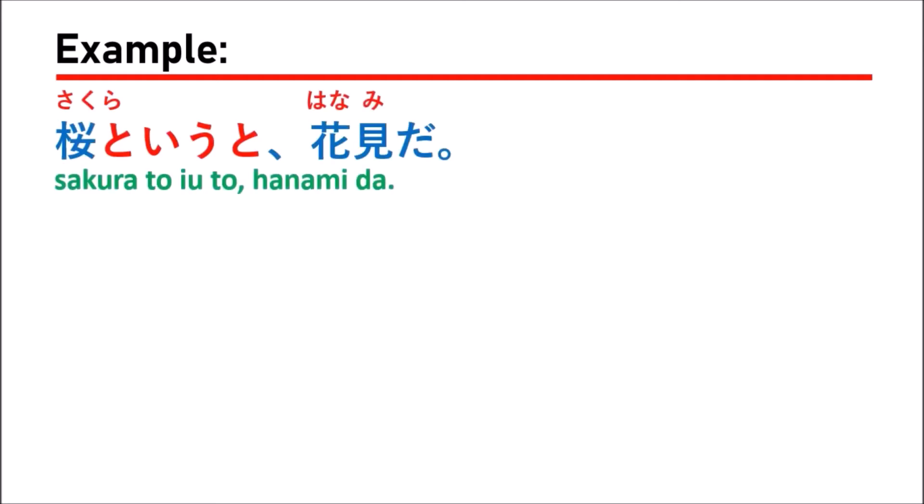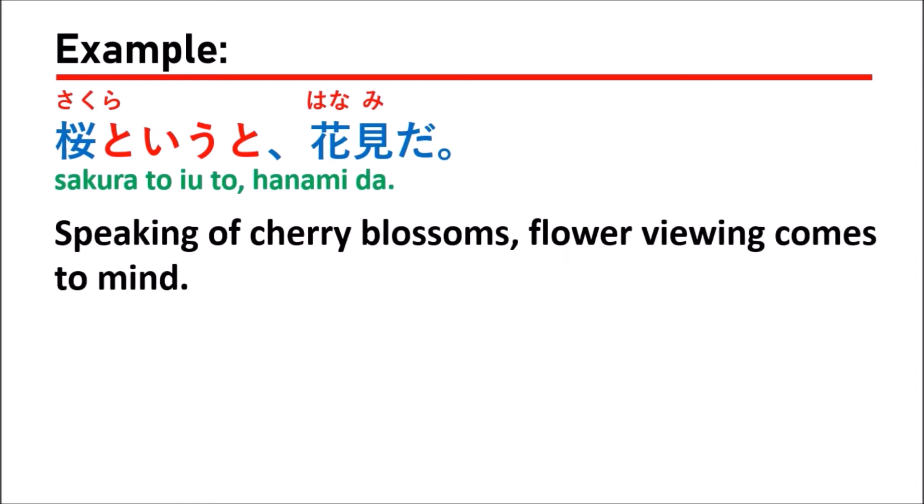In the first sentence, they say 「桜と言うと花見だ」(sakura to yuto, hanami da), which means: speaking of cherry blossoms, flower viewing comes to mind.